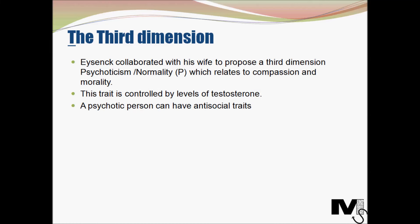Interestingly, he also collaborated with his wife to propose a third dimension called psychoticism versus normality, the P-dimension. This dimension relates to compassion and morality, and is actually controlled by the level of testosterone in a human being. The higher the level of testosterone, the more the level of psychoticism and the lower the level of stability. A psychotic person can have anti-social traits like selfishness, coldness, hostility, and impulsivity, but can also be creative. It is different to being unstable in Eysenck's eyes.